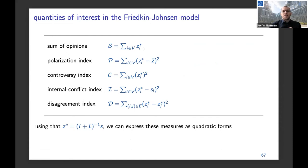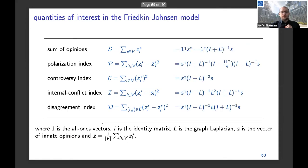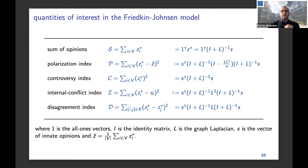Most of these indices can be written as quadratic forms. Exploiting the fact that equilibrium Z* = (I+L)^{-1} s, we get expressions where these quantities are quadratic forms in the innate opinions, involving the identity matrix, Laplacian, and mean opinion. What's really useful for analysis is that all of these matrices and their products are positive semi-definite. This means we can apply a lot of standard machinery from convex optimization.